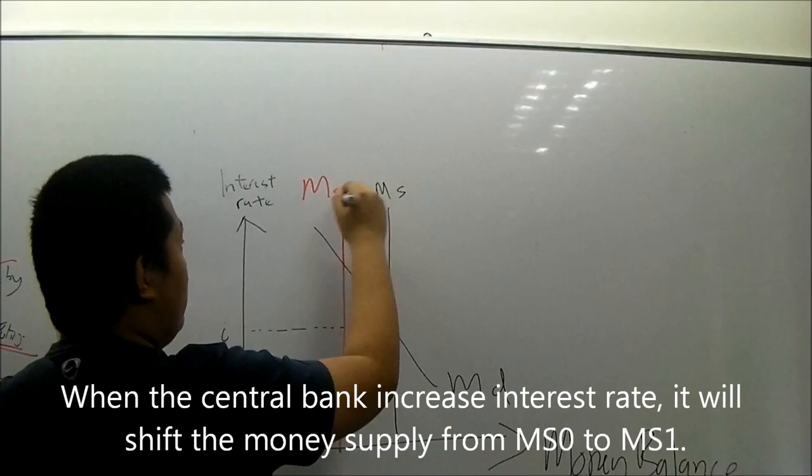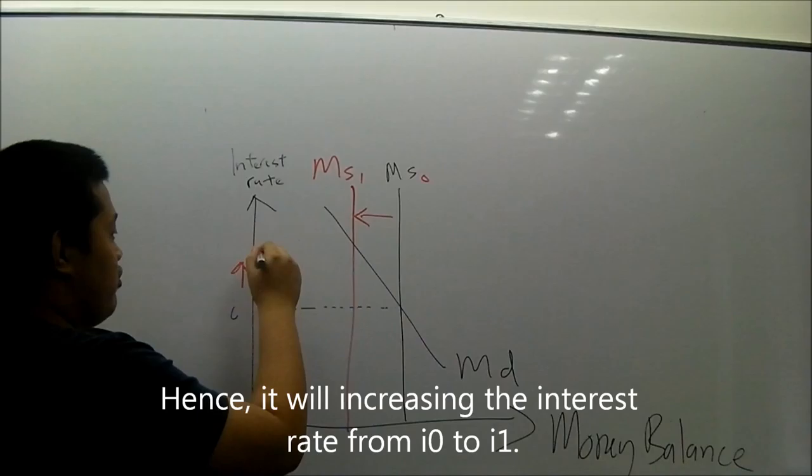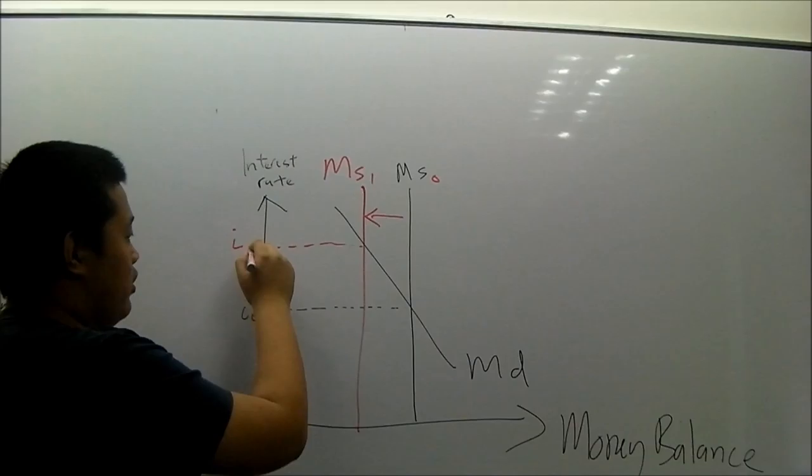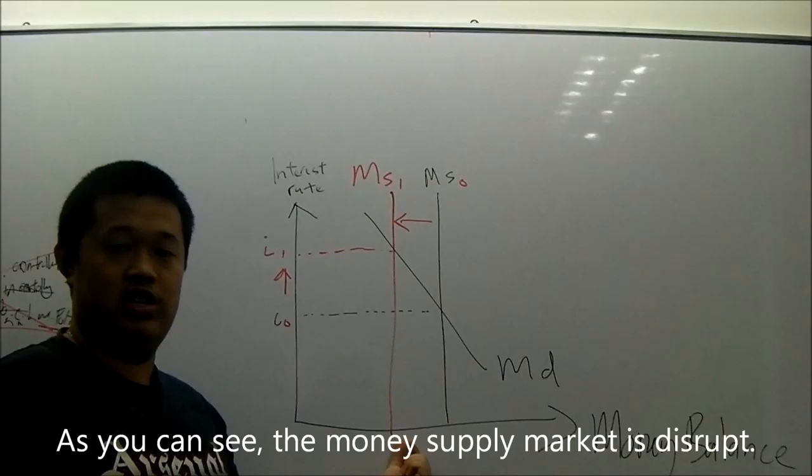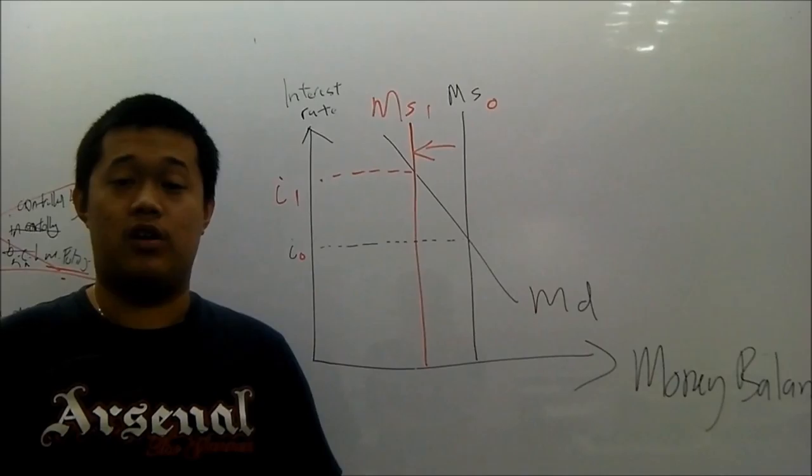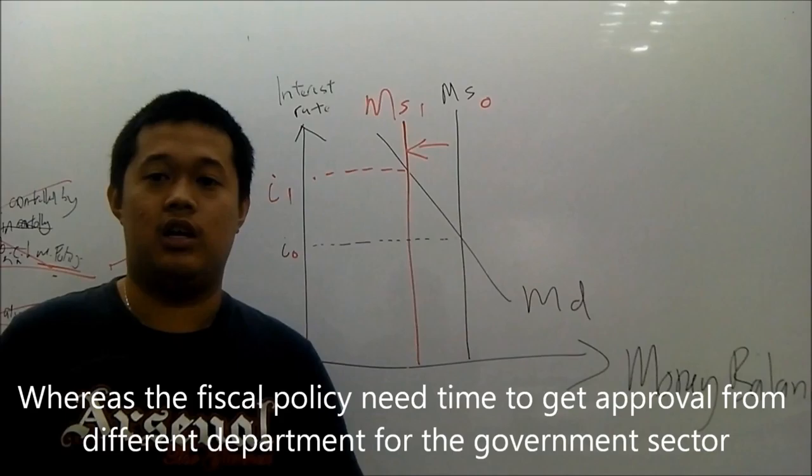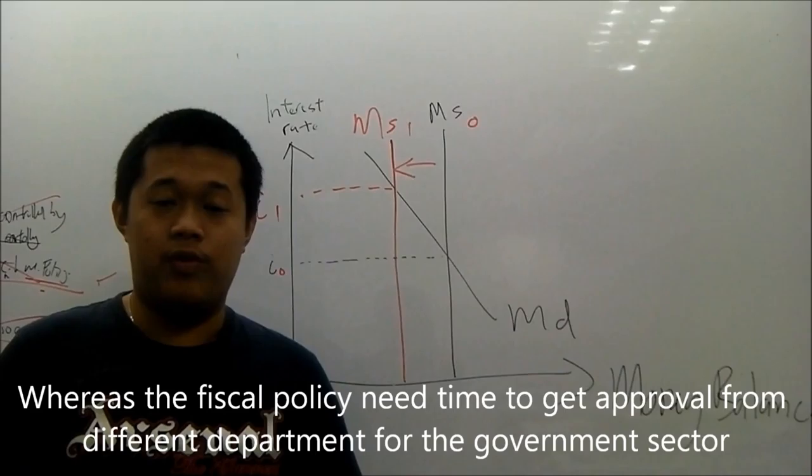I'm going to show you how to use contractionary monetary policy to help counter inflation. When the central bank increases interest rates, it will shift the money supply from MS0 to MS1, hence increasing the interest rate from I0 to I1. As you can see, the money supply in the market has already shrunk.